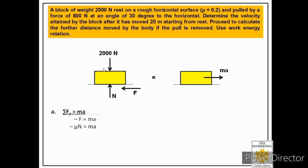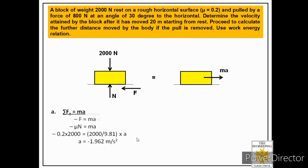We know mu_k equals 0.2, and now that the pull is removed, N equals 2000 Newton. The mass of the block is 2000 divided by 9.81. Substituting these values: 0.2 times 2000 equals (2000 / 9.81) times a, giving a retardation of minus 1.962 meters per second squared.